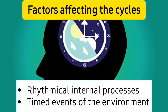Now let's talk about factors which affect these cycles. First, we already mentioned that the external environment plays a role. Different timed events happening in the environment affect these cycles. Also, internal processes — rhythmical internal processes — can also form or shape different cycles. The various functions happening inside our body can affect and maintain our body's overall clock or rhythm.